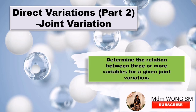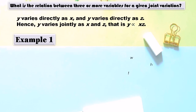A joint variation is a direct variation in which one variable varies as a product of two or more variables. What is the relation between three or more variables for a given joint variation? Y varies directly as S, and Y varies directly as Z. So Y varies jointly as S and Z.